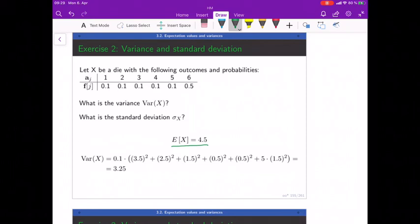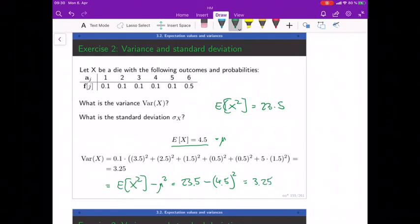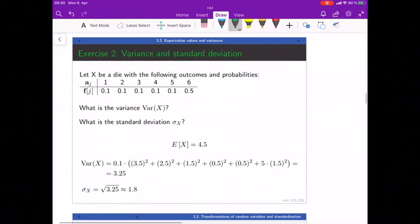What we also could have done is - if you scroll back up a little bit - we calculated earlier E[X²]. If I just look that number up, we found that's 23.5. We've learned earlier that the variance is also E[X²] minus mu squared. That's the 23.5 from here minus mu, which is 4.5, minus 4.5 squared. If you calculate that, you're also going to end up with 3.25. That might be the faster way to calculate this. Obviously, once we have this, take the square root and that's the standard deviation. Good.